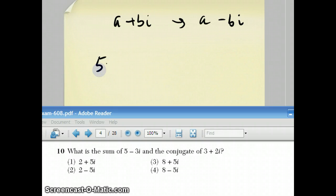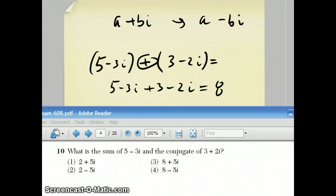So they want to know what's the sum of 5 minus 3i and the conjugate of 3 plus 2i, which is 3 minus 2i. Now adding complex numbers, you could just think of the i as if it were any variable, like an x or something. So I'll get rid of the parentheses. 5 plus 3i plus 3 minus 2i. Always be aware of this. If that was a minus, you'd have to change this sign. But it wasn't. 5 plus 3 is 8. Minus 3i minus 2i is minus 5i, which is choice 4.